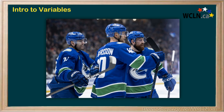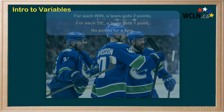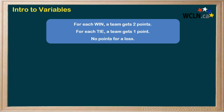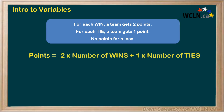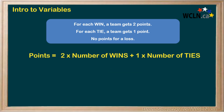A very common way to rate sports teams is to attach points to their wins and ties, something like this. For each win, the team gets two points. For each tie, the team gets one point, and no points for the loss. In equation format, we could look at it like this: the total points equals two times their number of wins, plus one times their number of ties.